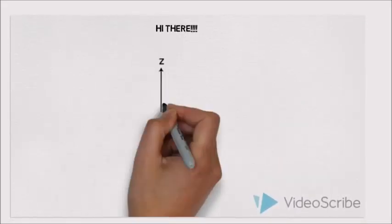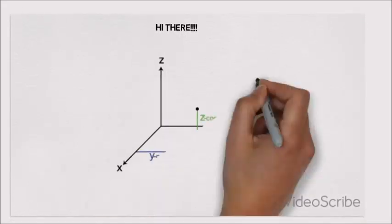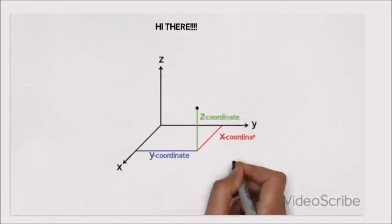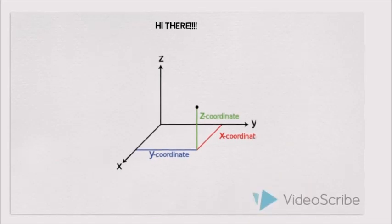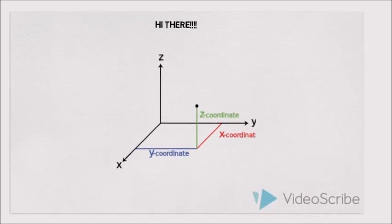Space has three dimensions: length, breadth and height. All points in space have three dimensions.